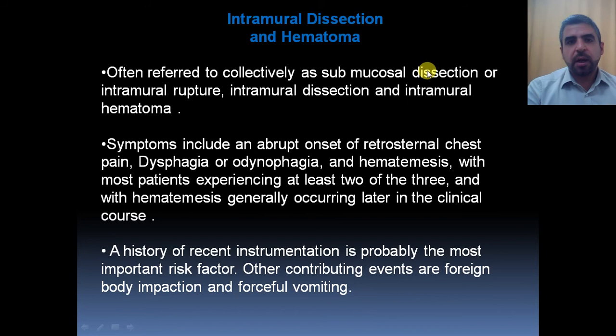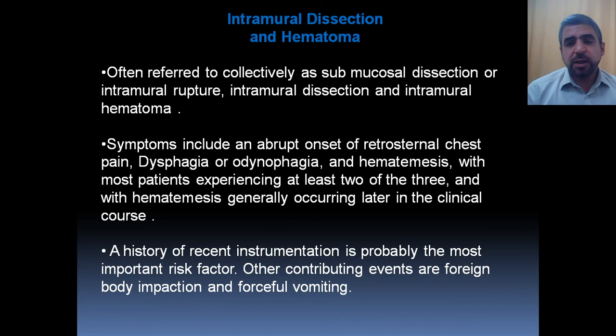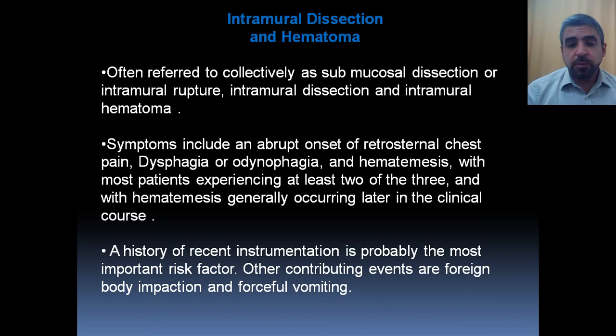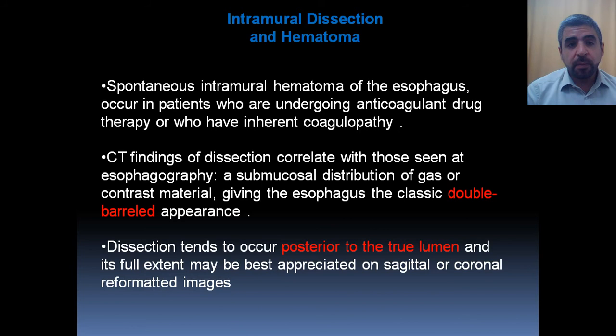Intramural dissection and hematoma — collectively referred to as sub-mucosal dissection, intramural rupture, intramural dissection, or intramural hematoma — present with symptoms including abrupt-onset retrosternal chest pain, dysphagia, odynophagia, and hematemesis. Most patients experience at least two of the three. Hematemesis generally occurs later in the clinical course. History of recent instrumentation is probably the most important risk factor. Other contributing events are foreign body impaction and forceful vomiting. Spontaneous intramural hematoma of the esophagus occurs in patients undergoing anticoagulant drug therapy or who have inherent coagulopathy.